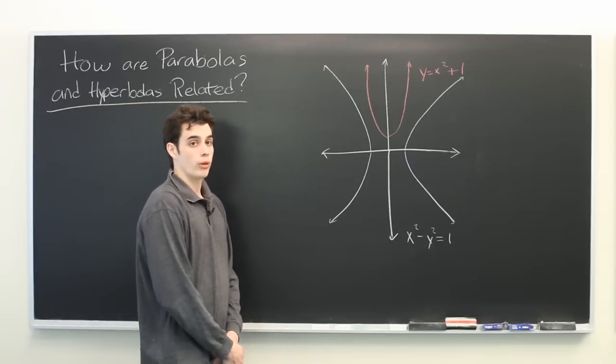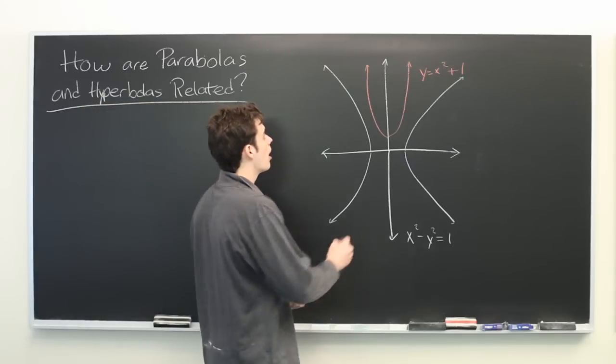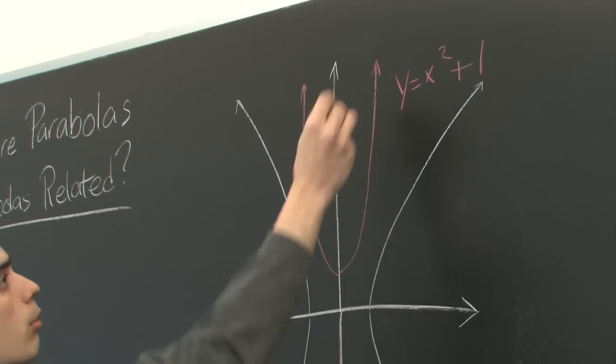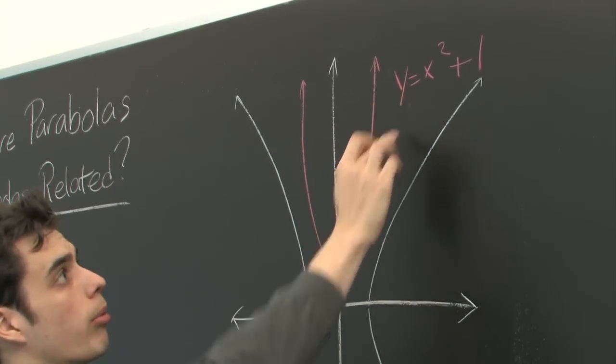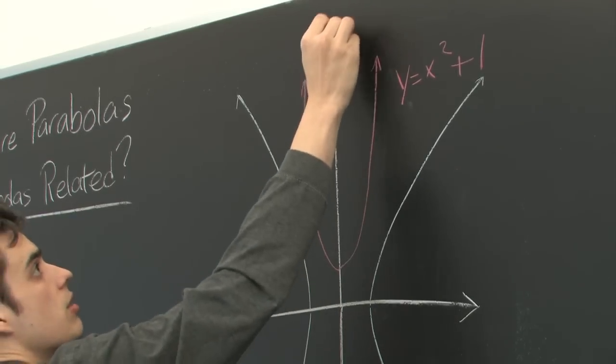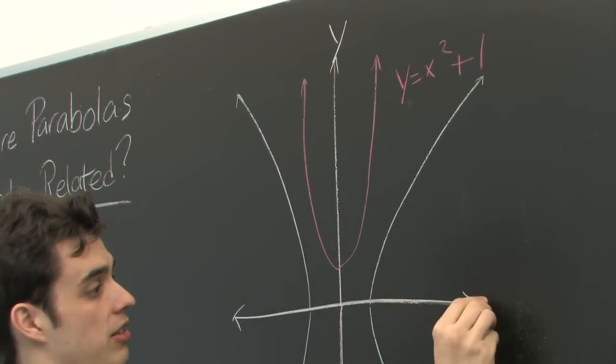To quickly review what those two terms mean, here we have a parabola that is defined by the equation y equals x squared plus 1. Here we have our y axis and here we have our x axis.